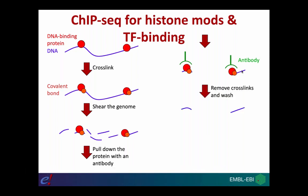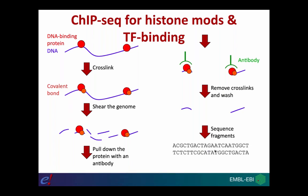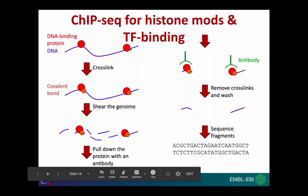We then retrieve the small DNA fragment from the antibody-protein complex, sequence these fragments, and align them to the genome. Once these fragments are aligned to the reference genome, we can work out where these proteins were originally bound in the sequence.